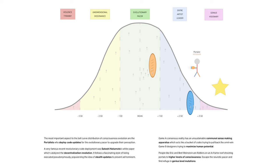A very famous recent revolutionary code deployment was Satoshi Nakamoto's white paper, which catalyzed the decentralization revolution. It follows a fascinating style of being executed pseudonymously, popularizing the idea of stealth updates to prevent ad hominem.